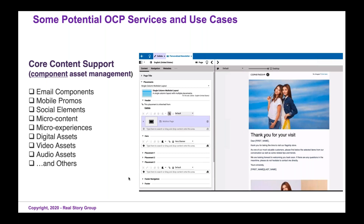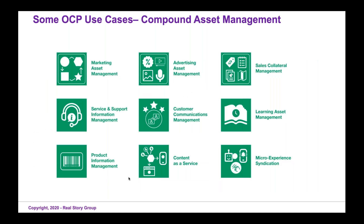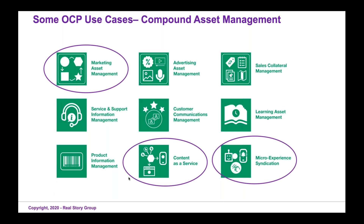Beyond component asset management, we move to compound asset management, and there are some really important business use cases here as well. We've identified nine of them. This is the core of how we evaluate vendors — the extent to which they fulfill particular use cases. Typically a vendor in a marketplace with as many as nine use cases will only support three or four particularly well. So it's really important for you to understand what key services you want out of this platform. Early on, we're seeing three of these really come to the fore: marketing asset management (with email as a subset), content as a service, and micro-experience syndication. The OCP marketplace is a little bit slower towards realizing some of the other capabilities.